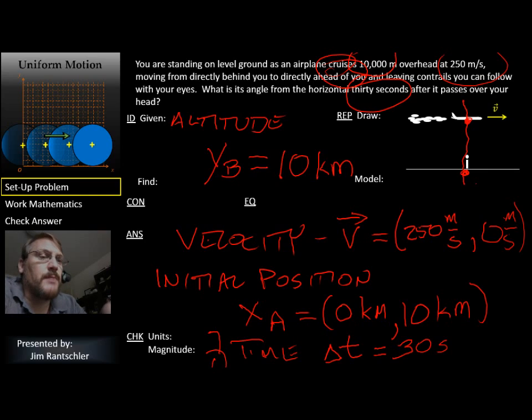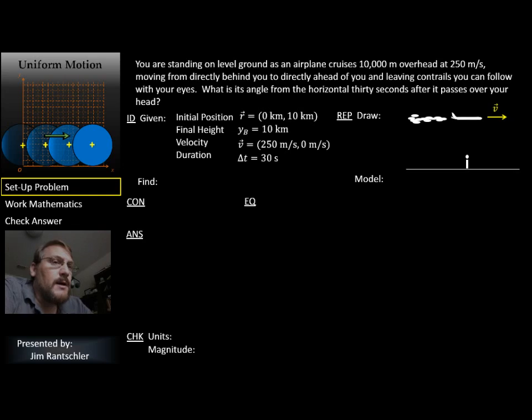So those are the things that we want to put in this given place. Now we want to figure out what we want to find. We want to find this angle from the horizontal. It's an angle, and the angle needs a name. What you want to find needs a name and it needs a symbol, and so that should be a theta. So let's go ahead and do that.